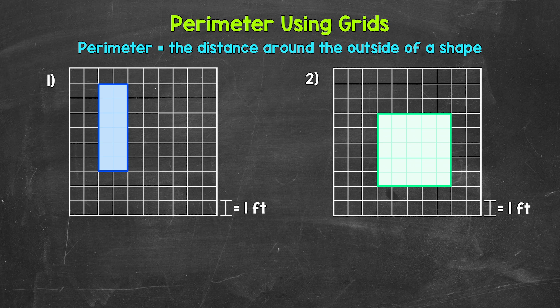Let's jump into number one, where we need to find the perimeter of that rectangle. We're not going to count each individual unit going all the way around. For numbers one and two, we're going to be working with feet, so each side of a square is one foot. So how do we find perimeter without counting each foot all the way around?